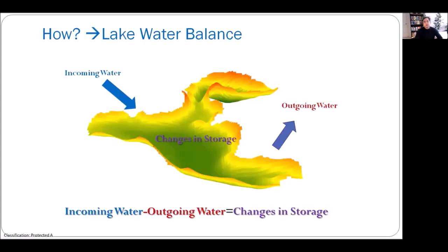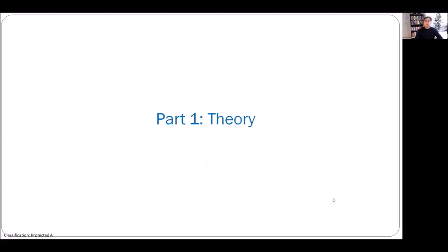The question is how we actually estimate the lake water balance. As you can see, this is a 3D diagram of a lake in Alberta. There are basically three components in a lake water balance. The first component is how much water is actually coming into the lake — we call it incoming water. The second is how much water is going out of the lake, which is outgoing water. Depending on the values of incoming and outgoing water, there will be a change in storage in the lake — it could be positive or negative.